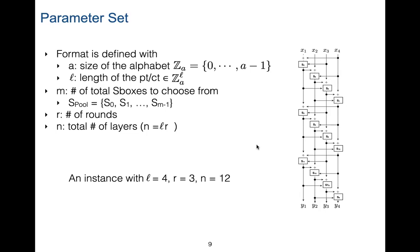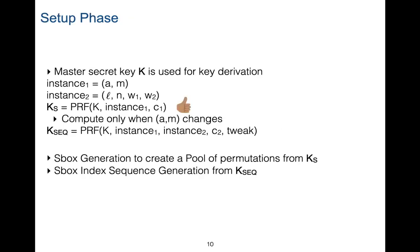One instance: L equals four, meaning the message has length four, with three rounds and twelve layers. One example round consists of four layers because the message length is L. This illustrates what we mean by layer and round.